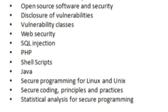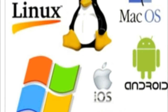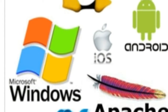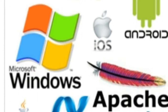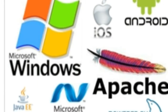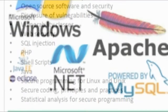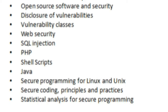Further topics in secure programming include code auditing for C and C++ code, assurance measures, open source software and security, disclosure of vulnerabilities, vulnerability classes, SQL injection, PHP shell scripts, Java secure programming for Linux and Unix, and secure coding principles and practices, including statistical analysis for secure programming.